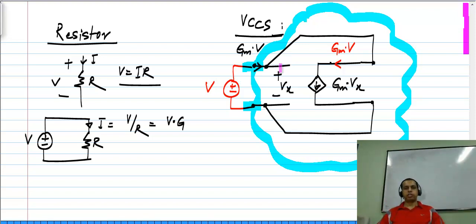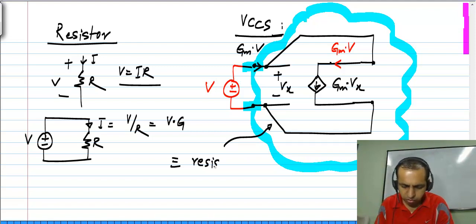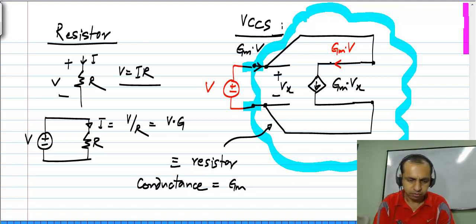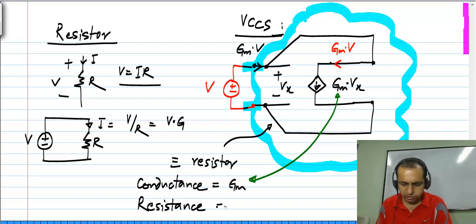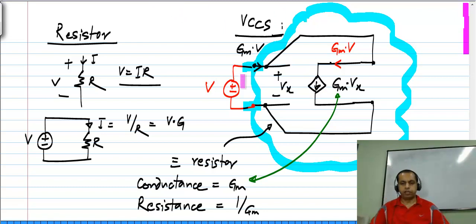From those two terminals, you cannot distinguish this from a resistor. This entire circuit inside here is equivalent to a resistor, and its conductance is given by Gm — which is the proportionality constant of the voltage controlled current source — or equivalently, its resistance is given by 1 by Gm. We have a voltage controlled current source and the controlled current is connected back to the controlling terminals.